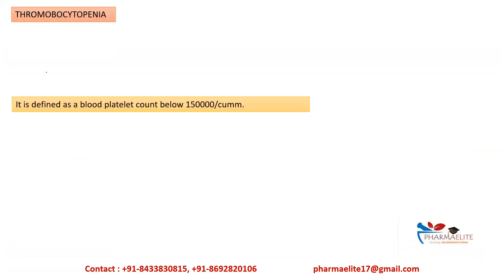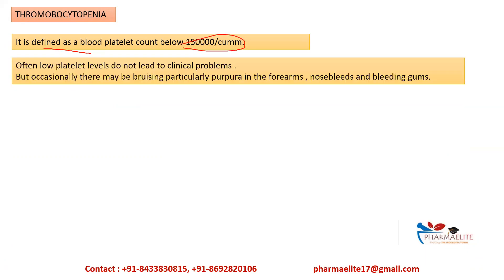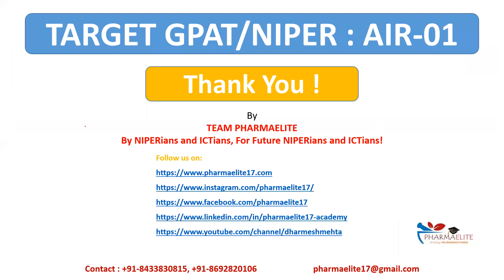The final disorder is thrombocytopenia, defined as a blood platelet count below 150,000 per cubic mm. Often low platelet levels do not lead to clinical problems, but there may be bruising — particularly purpura in the forearms — nosebleeds, and bleeding gums. It may be caused by a reduced rate of platelet production or an increased rate of platelet destruction. That's it for today. Thank you.